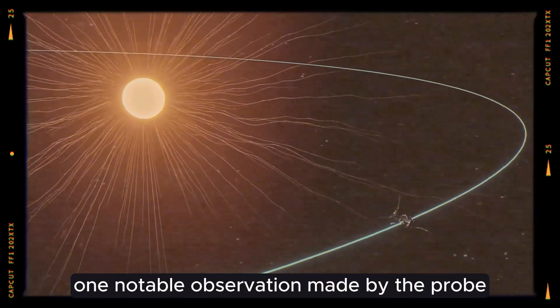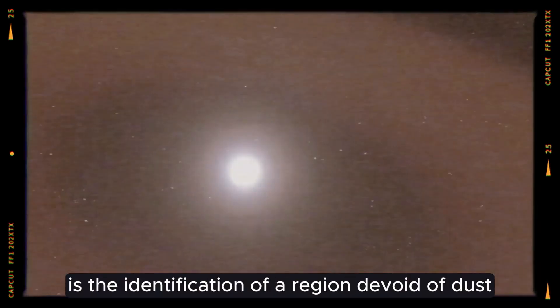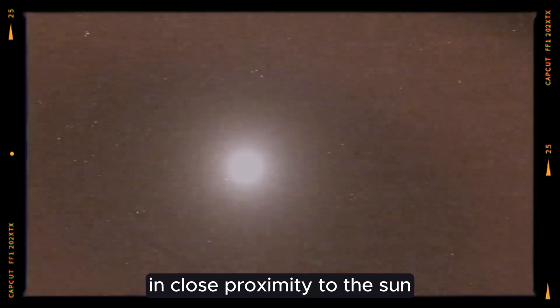One notable observation made by the probe is the identification of a region devoid of dust in close proximity to the Sun.